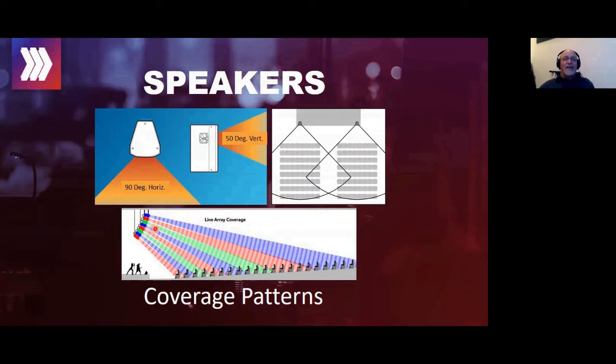The inverse square law says that you lose 6 dB per doubling of distance, but in the case of a line array, it defies that by 3 decibels. So it only drops off at 3 dB per doubling of distance.